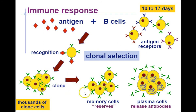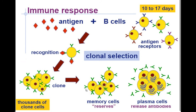The clones can become one of two types of cells: memory cells or plasma cells. Memory cells hide in your blood, and if that antigen comes back you'll be ready to fight it. The response to a second invasion is much quicker than the first — the first invasion takes about 10 to 17 days to mount an effective response. This is also why you typically don't get chicken pox again: you make memory cells, and if exposed later those memory cells clone and fight off the infection before it causes disease.